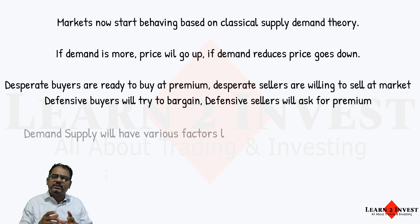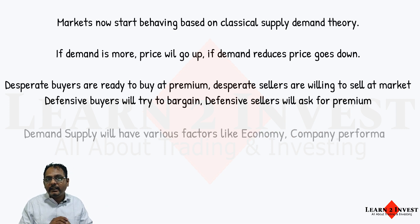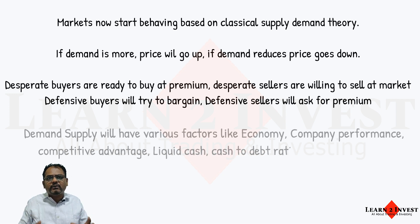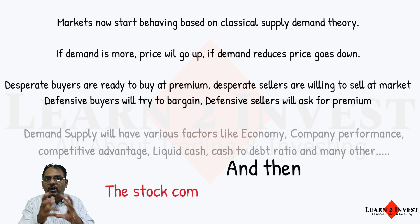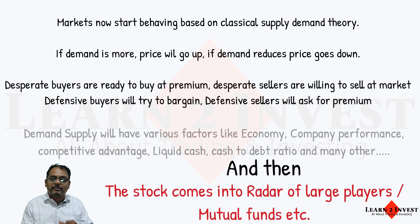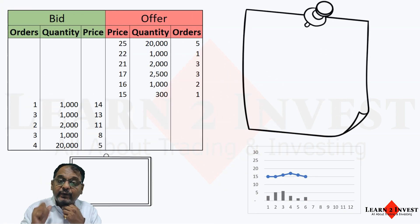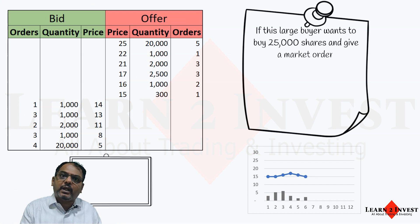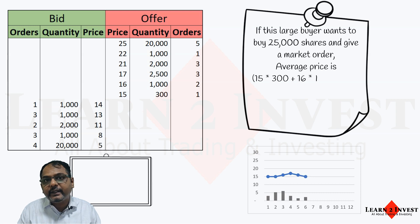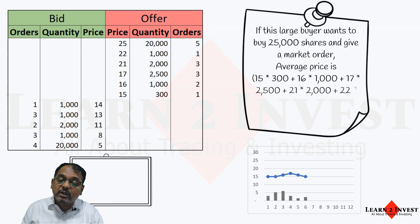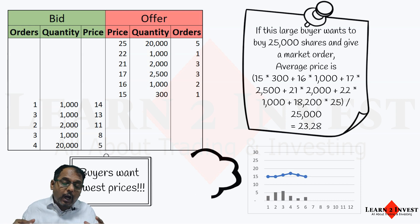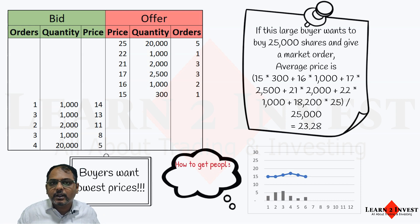All these supply-demand dynamics work only until a large player enters. If a large player or mutual fund decides to buy 25,000 quantity — and large players actually buy much more than that — and if they place a market order, they could end up paying more than 23 rupees for everything, when the fair value is 15 rupees. Buyers want the lowest prices possible, so how does a large player get sellers to sell at those lower prices?